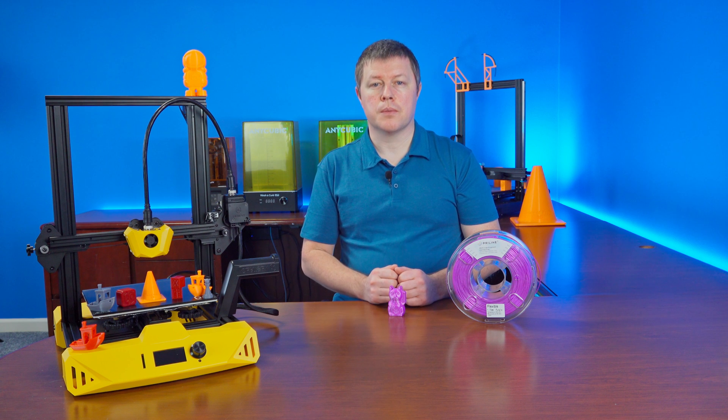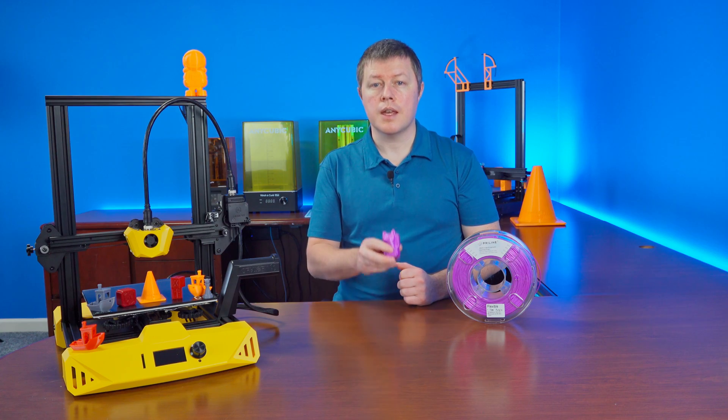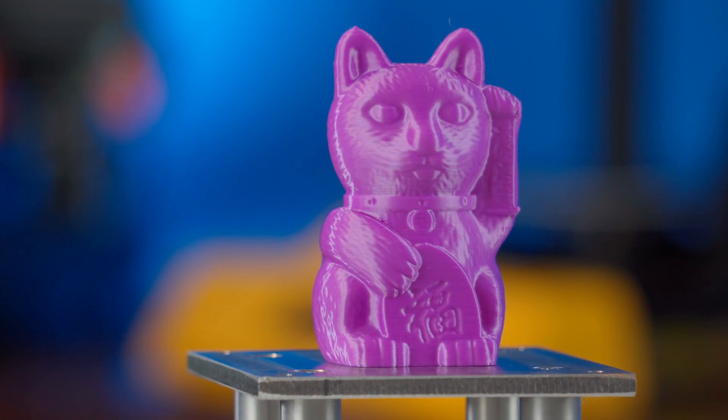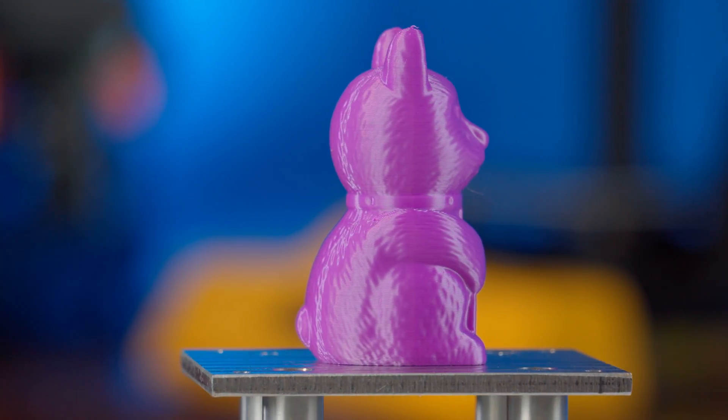Next was this TPU from Pryline. I wanted to see how well it performed on something with a little more surface detail. This Lucky Cat model does a good job at testing just that. I printed this with no infill and only three walls and the machine had no trouble with the overhangs and the surface detail is near perfect.